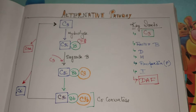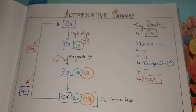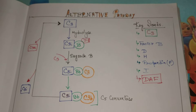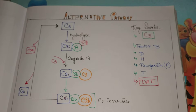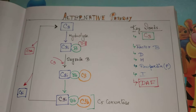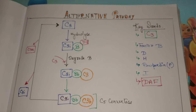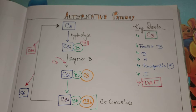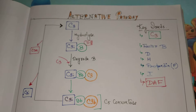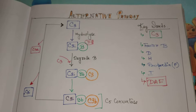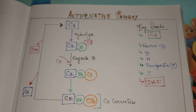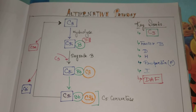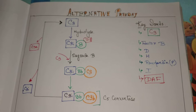In my previous video, I already described the classical pathway and the overview of the complement system. The alternative pathway is much more complicated than the classical pathway and the MBL system.